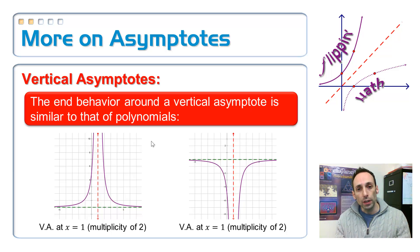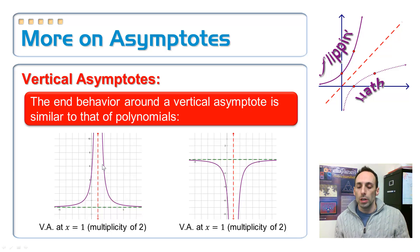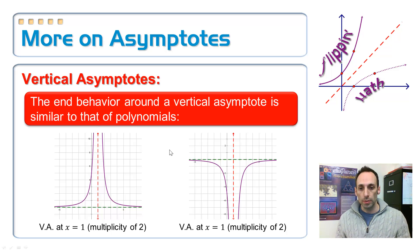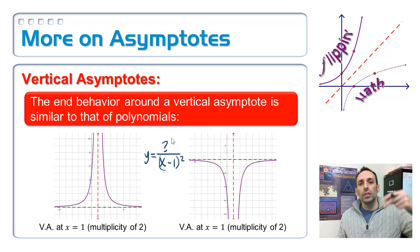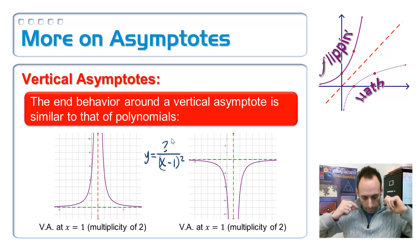If the multiplicity is even for that factor, you can have referee behavior — either both up or both down. On the left-hand graph, on either side of the vertical asymptote at 1, both ends are going upwards. On the other graph, both ends are going downwards. The equation might look like y equals something over (x minus 1) squared — even multiplicity. With an even multiplicity of that vertical asymptote, it's going to have referee behavior: both up or both down.